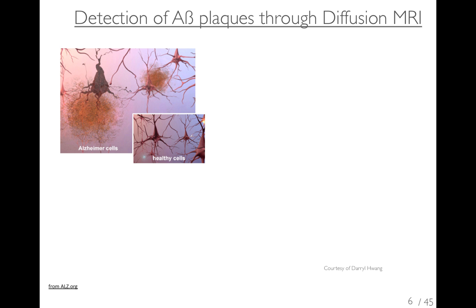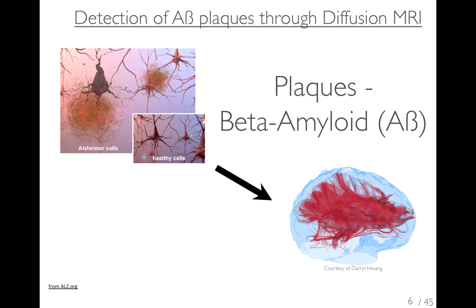And much of my work is how to extend current DTI methodology to achieve this. So there are the plaques here. And what happens when we try to image those tracts and the white matter tracts that have these beta amyloid plaques in them.